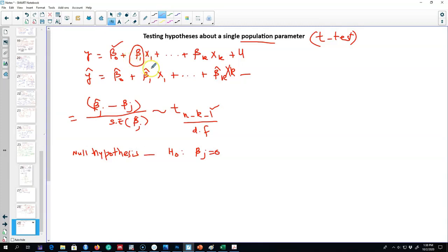Beta 1 represents the partial effect of x1 on y. Similarly, any beta j represents the partial effect of xj after controlling for all other independent variables in the model. So what we're saying is that after controlling for all these other factors, x1 has no effect on y. This is our null hypothesis.